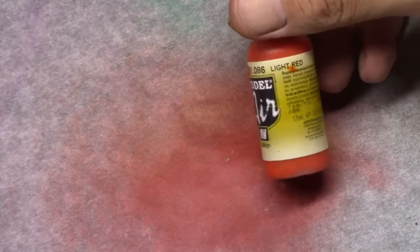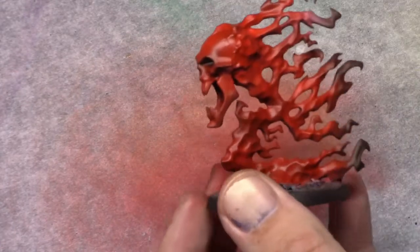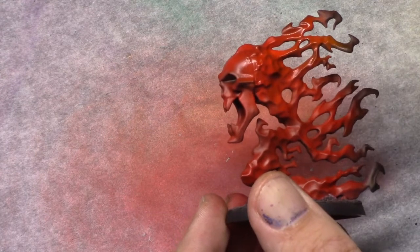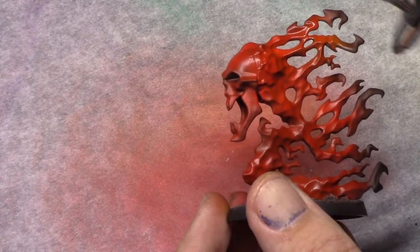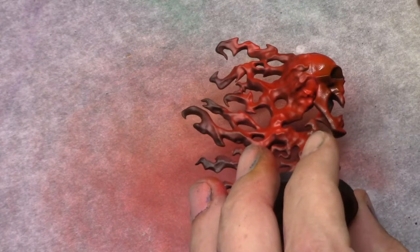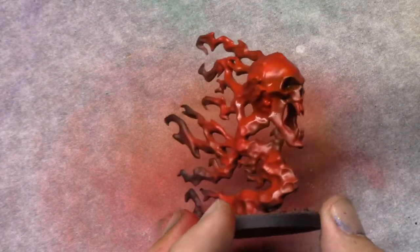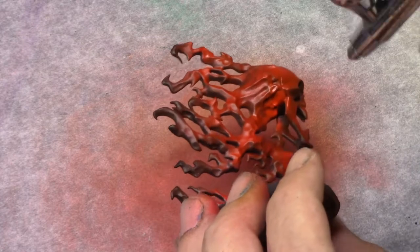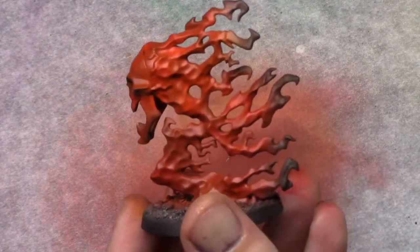Once that's dry I move on to Light Red. And this actually is sort of like an orangey light color. I focus on specific areas where I want the heat to build up on the model. At this stage it's still fairly large parts of the model.